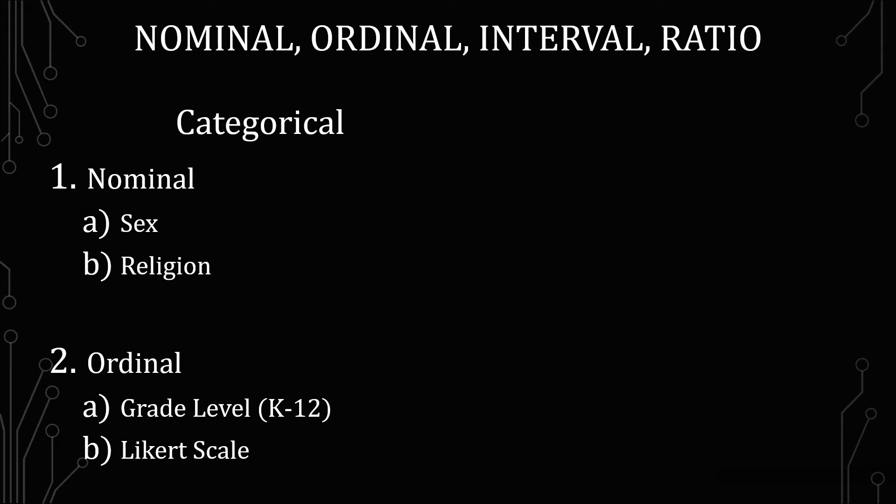The next is ordinal. Ordinal is you have order, as implied by the name. It doesn't necessarily mean that order can be measured numerically. It is order that comes with its contextual understanding. An example of this is grade levels in the United States, K through 12, where you have kindergarten going up to 12th grade.